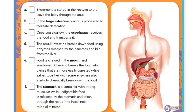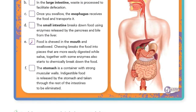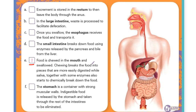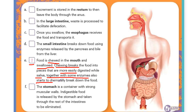Ya que hayan leído y buscado las palabras que no entiendan, van a ordenarlo. Entonces aquí les está describiendo el proceso de digestión. Ya está la number one — la comida es masticada en la boca y tragada. 'Chewing breaks the food into pieces that are more easily digested, while saliva, together with some enzymes, also starts to chemically break down the food.' Al masticar se rompe la comida en piezas más fácilmente digeridas, mientras que la saliva junto con algunas enzimas también comienza químicamente a partir la comida. Esa es la primera parte en nuestra boca — después, ¿qué sigue? Ustedes van numerando.